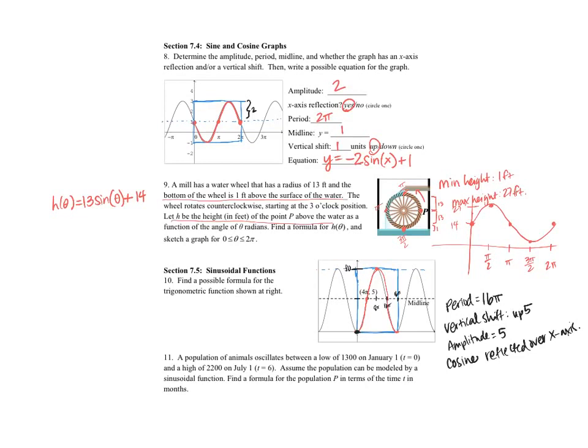So if the period is 16 pi, so what I want to say is that y is equal to A cosine Bx plus C. And so the period is 2 pi over B. So if I multiply B on that side, I get 16 pi times B is equal to 2 pi. So I can divide that by 16 pi. I'm going to get B is equal to 1 eighth.